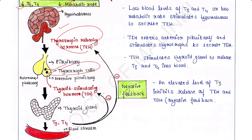TSH stimulates the thyroid gland to release T3 and T4 into the blood until the metabolic rate returns to normal. An elevated level of T3 then inhibits the release of TRH and TSH — this is called the negative feedback reaction.